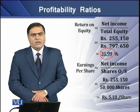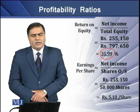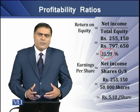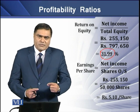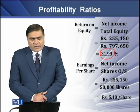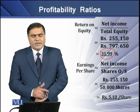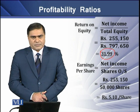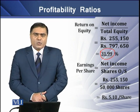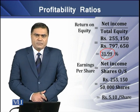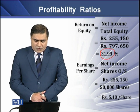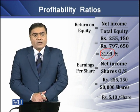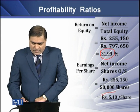We determine profit in terms of shares issued by a firm. The formula to determine Earnings Per Share is net income over outstanding shares issued by a firm. If we have 255,150 as net income and 50,000 outstanding shares, then the earnings per share comes to rupees 5.10.